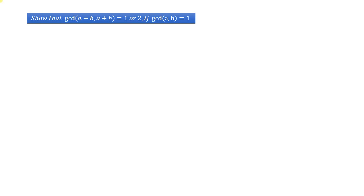Hi guys, welcome to Concept of Mathematics. Today we will see a question from greatest common divisor. So let us start. The question is: Show that GCD of (a - b, a + b) = 1 or 2 if GCD(a, b) = 1.